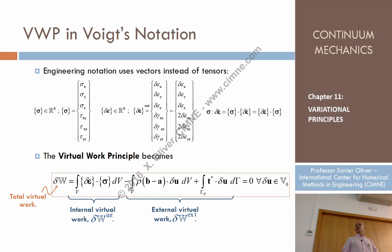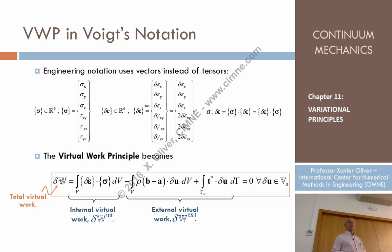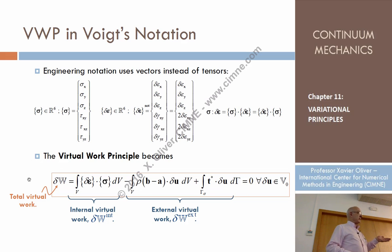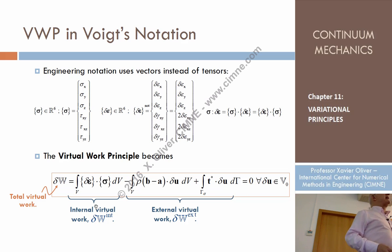Another remark: this is a principle that establishes that the Gateaux derivative is zero — that means the variation, the Gateaux derivative, of a certain functional W is zero, so it has an extremum. But it's interesting: we don't know this functional. We don't need to know what W is — we just need the variation of W. In general, we don't know what functional we are minimizing. But we know that this functional has an extremum at the solution of the problem. The solution of this variational problem is the solution of the continuum mechanics problem. And this is the starting point for computational mechanics.